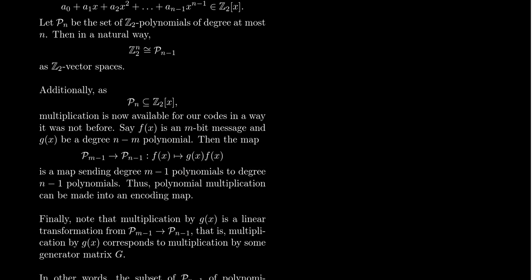Now, if you think of the domain and codomain here, we take polynomials whose degree is at most m minus 1. If we times that by the polynomial g(x), that'll give us a polynomial whose degree is at most n minus 1.